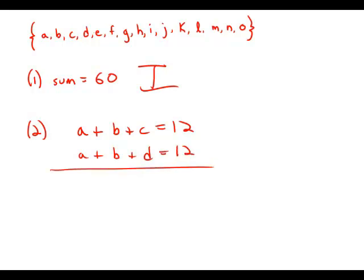Notice what happens if we subtract those two equations. We get c minus d equals zero or c equals d. It makes sense that if you add up any three numbers and get 12, you could take out any one of those and substitute in any other and you'd still get 12. The only way that would work is if all the numbers were equal.